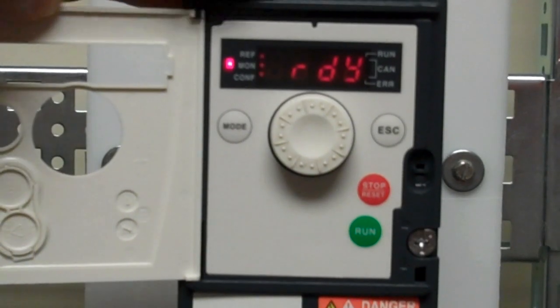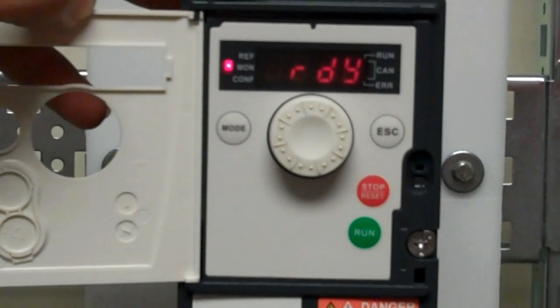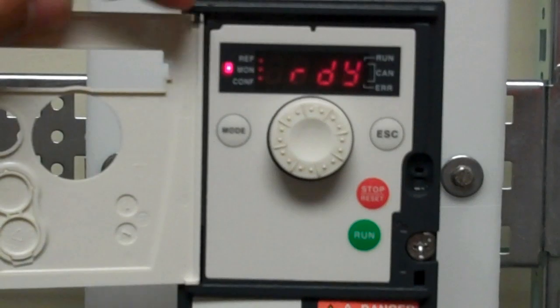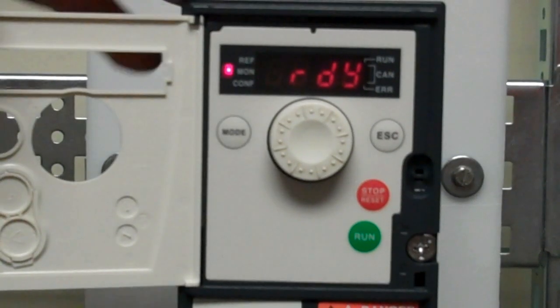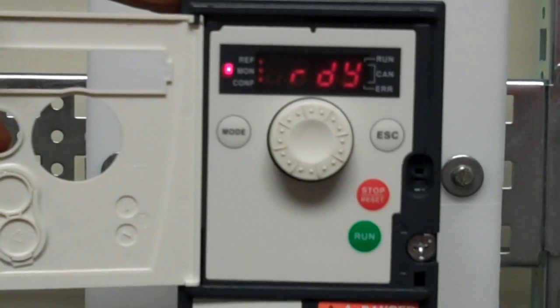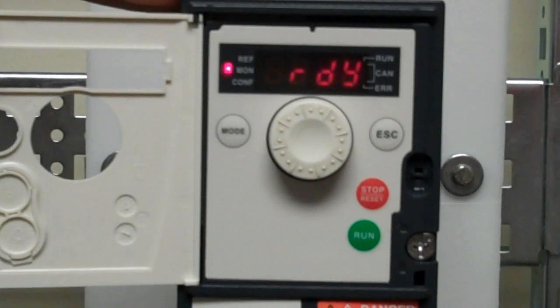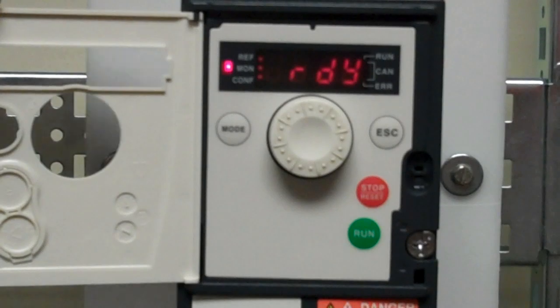The last thing we have to do is put the drive back into running mode. I mentioned before that if the LEDs are flashing at the same time, you're in programming mode and can make adjustments. But to run the drive, you have to be in running mode, where the LEDs flash one at a time.